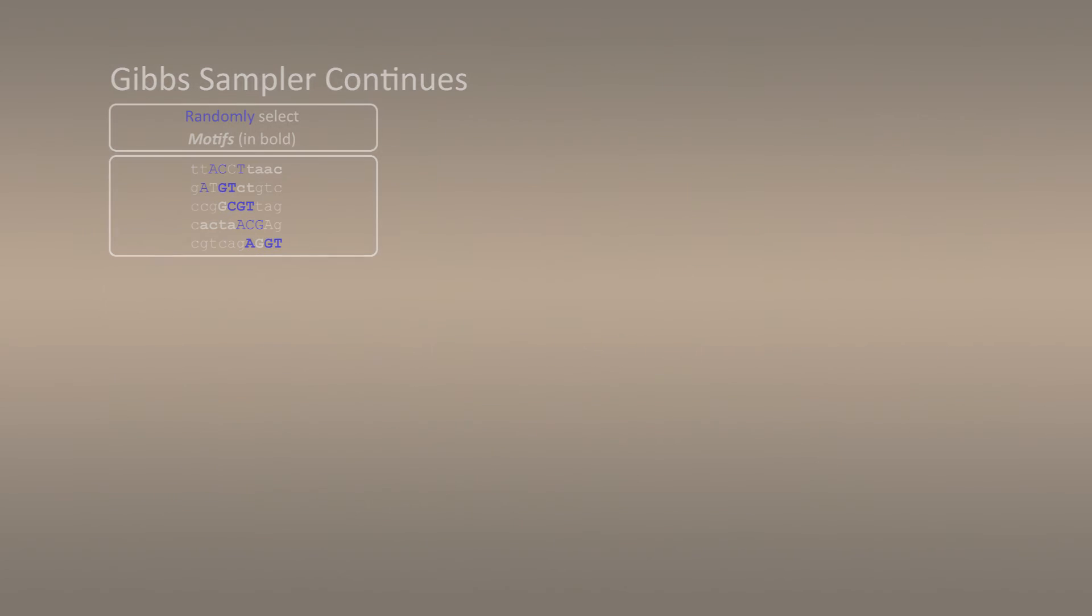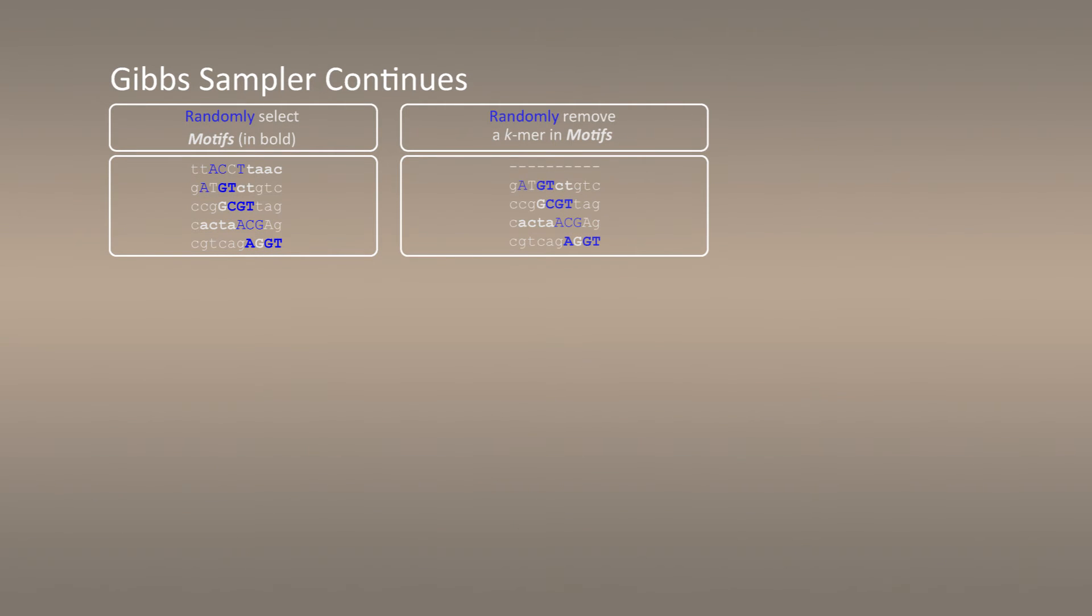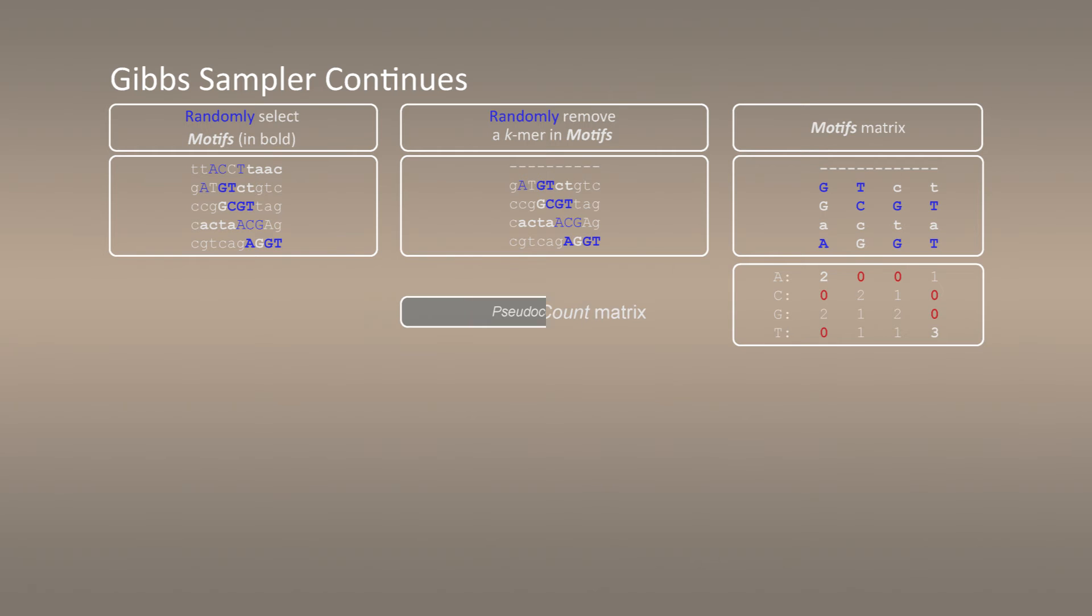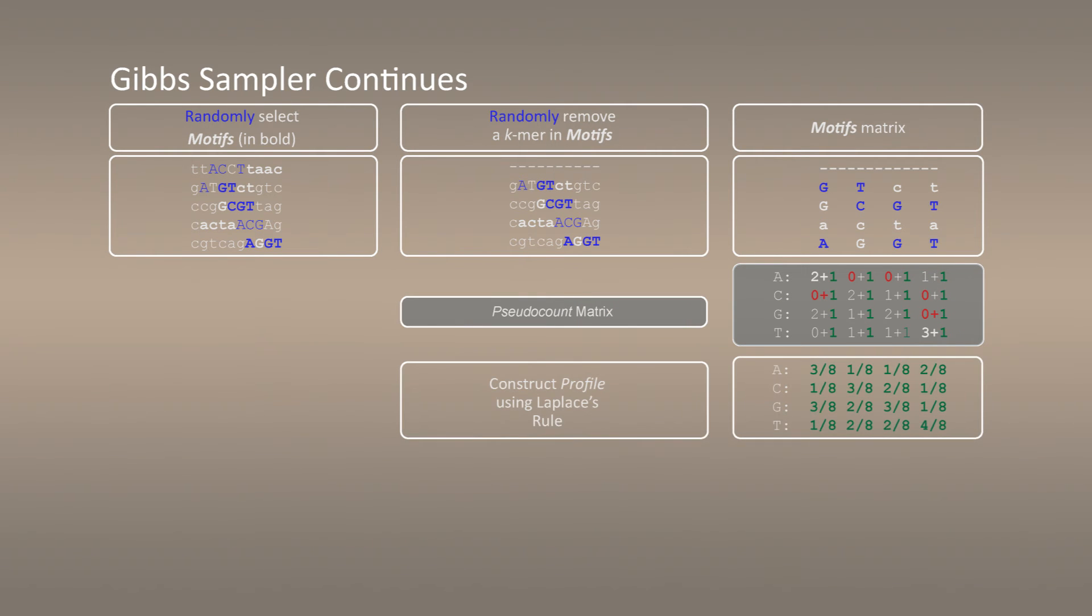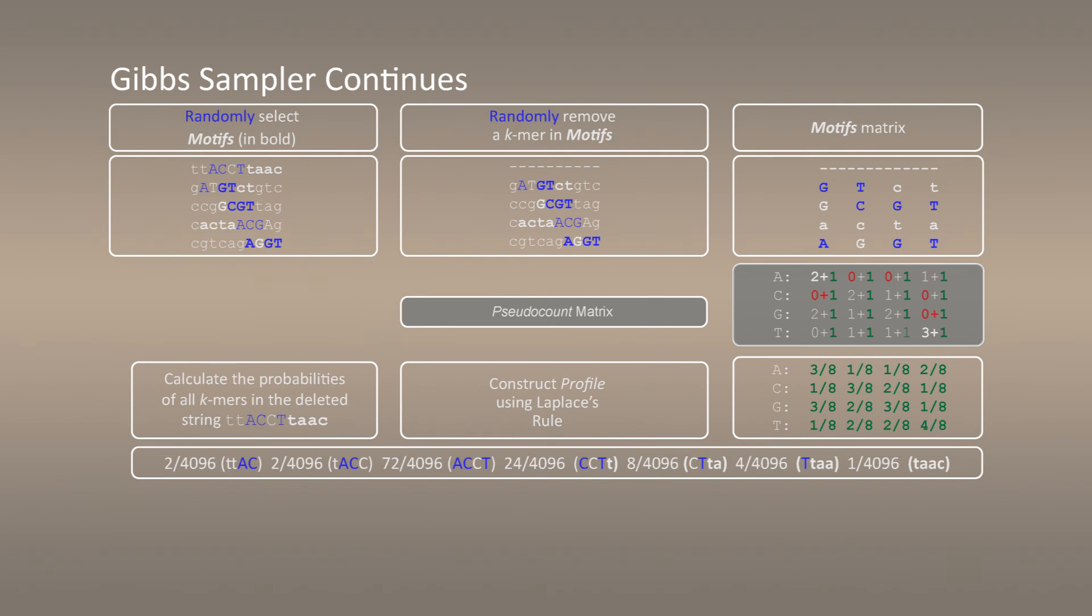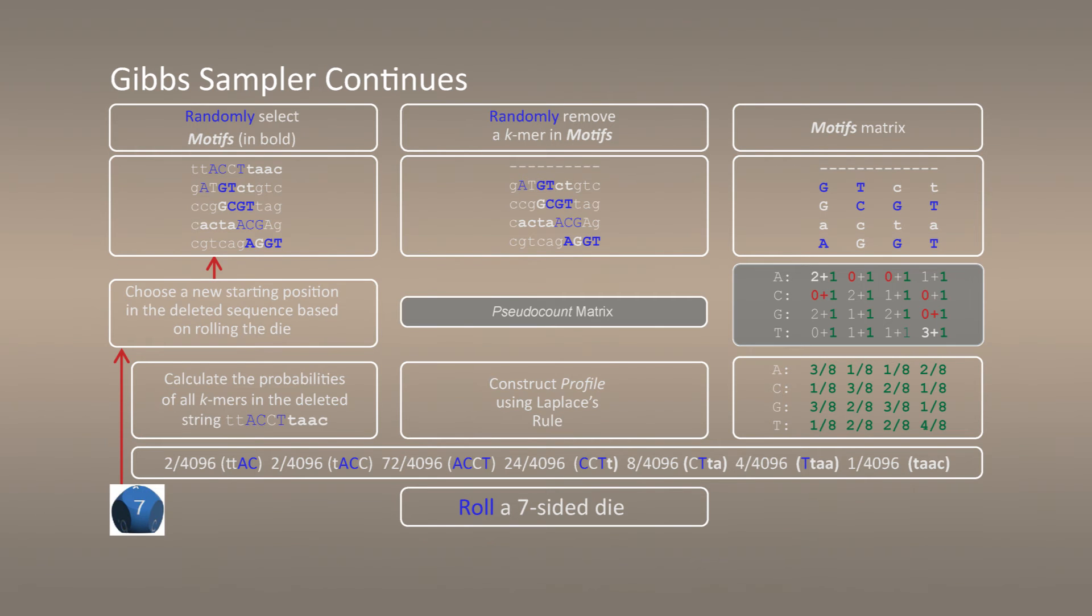So starting from this, we once again continue with Gibbs sampler, remove one of the sequences, form a motif matrix, build count matrix, update it with pseudocounts by adding one to every entry, compute profile matrix once again, compute probability of every kmer, and once again roll seven-sided dice. The seven-sided dice leads to changing once again one of the choices of our motif, and we start a new iteration.